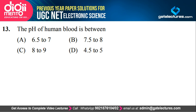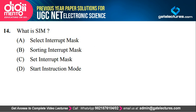They are asking about the pH of human blood. The pH of human blood is basically between 7.5 to 8. There is nothing much to explain in this question, so we move to the next question.